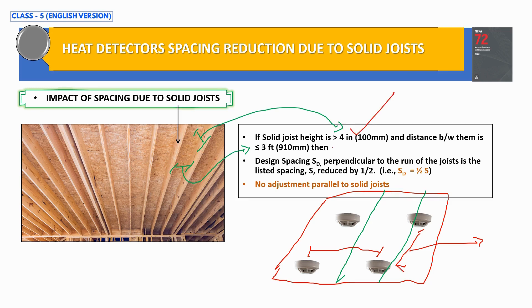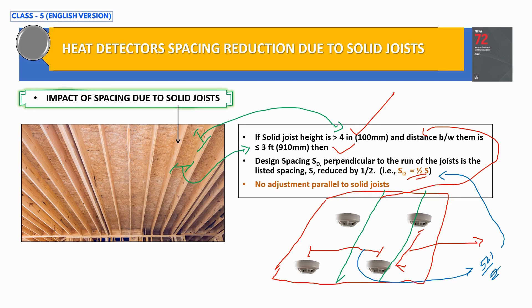If both solid joist conditions are satisfied, the formula is: HD = 50 feet ÷ 2 = 25 feet, since 50 feet is the listed spacing S as per NFPA 72. However, as per NFPA 72, there is no adjustment parallel to the solid joist — meaning that distance remains the listed spacing of 50 feet. So the spacing perpendicular to solid joists is SD = 25 feet, while the spacing parallel to solid joists remains 50 feet.